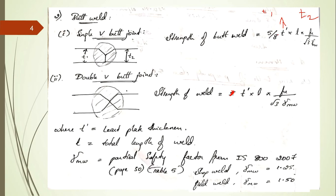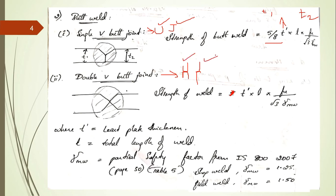The strength of a single V-butt weld is less than the double V-butt because there is incomplete welding in the single V case. This also applies to U-butt and J-butt joints — for double U-butt and double J-butt the strength equals T-bar into L into FU by root 3 divided by gamma W. T-bar is the least plate thickness, L is the total length of the weld, and gamma W is the partial safety factor per IS 800:2007 page 30, table 5.